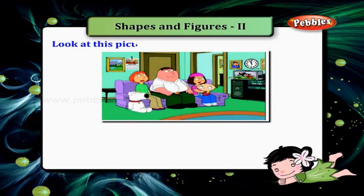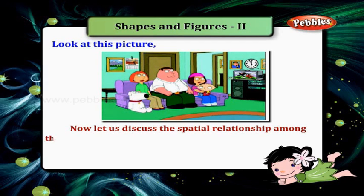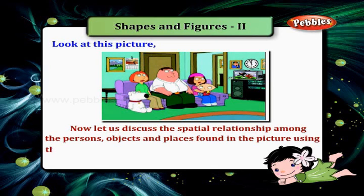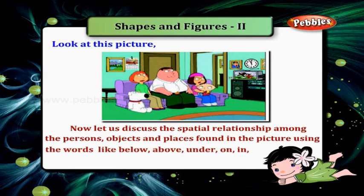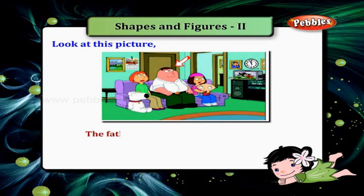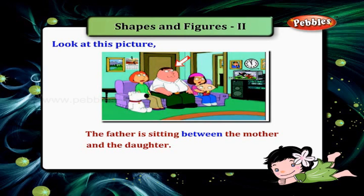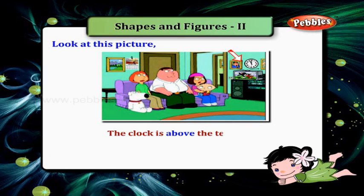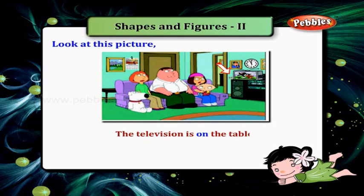Look at this picture. Now let us discuss the spatial relationships among the persons, objects, and places found in the picture, using words like below, above, under, on, in between, and so on. The father is sitting between the mother and the daughter. The clock is above the television. The television is on the table.